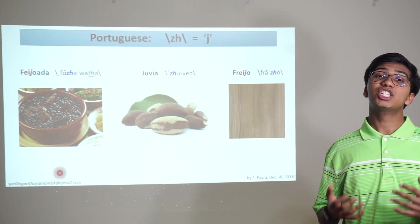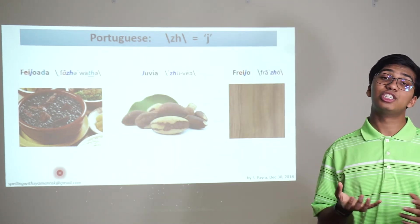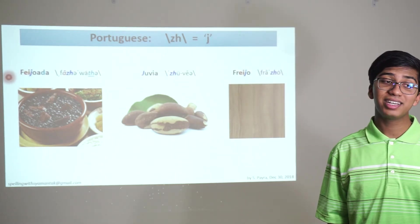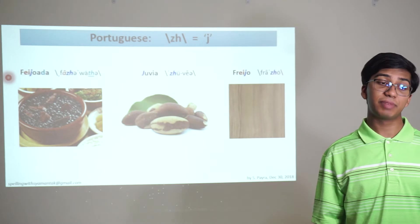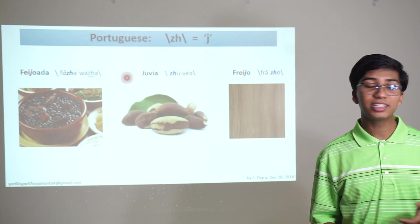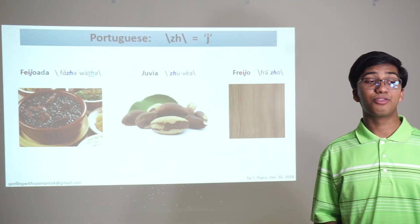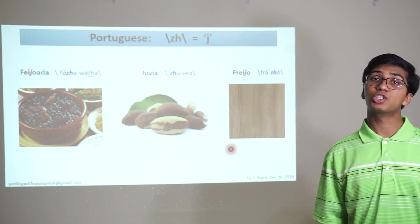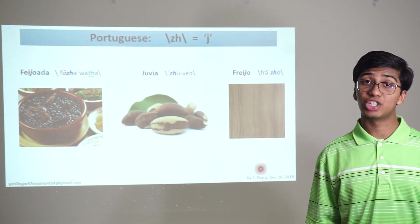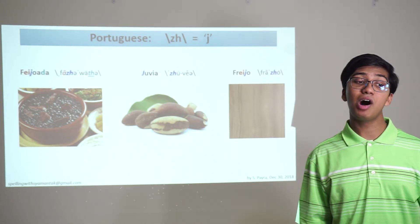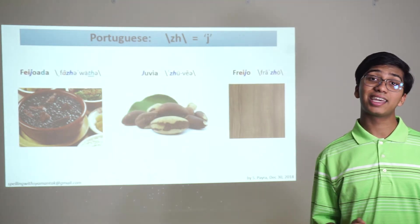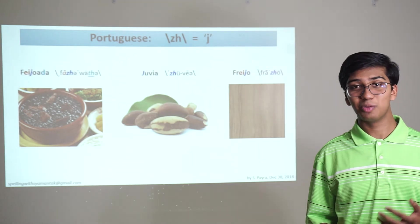Then you have the J sound. In Portuguese, that J sound is spelled with a J. Feijoada is a thick stew made of black beans and meat. Juvia is another name for the Brazil nut. And freijó is a hard strong wood of a timber tree in the lower Amazon. For some bonus words, look up inajá — a tall pinnate-leaved Brazilian palm with immense prickle-tipped spades, spelled I-N-A-J-A.